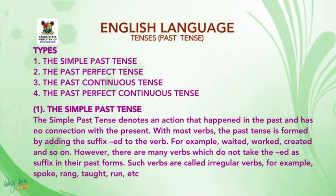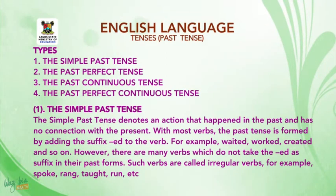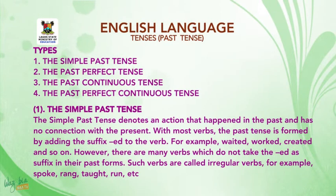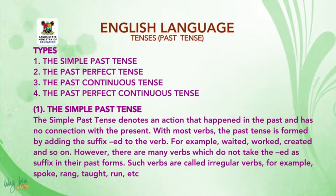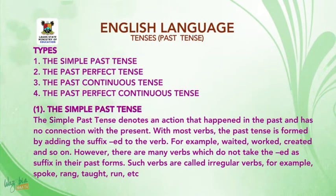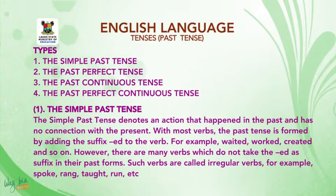With most verbs, the Simple Past Tense is formed by adding the suffix -ED to the verb — for example: worked, created, waited. It can also accept irregular verbs such as spoke, rang, taught. So the Simple Past Tense means a just concluded action which can take ED as its past verb or it can take irregular verbs.